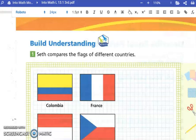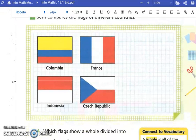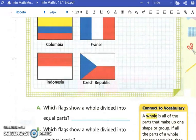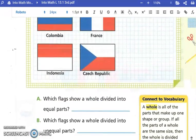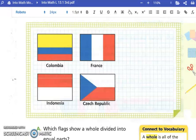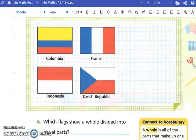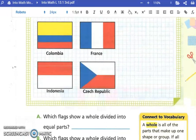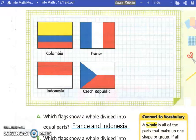Seth compares the flags of different countries. We have Colombia's flag, that's the yellow, blue, and red flag. We have France's flag, which is blue, white, and red. Indonesia's flag, which is just red and white. And then we have the Czech Republic, which is red, blue, and white. The first question is, which flags show a whole divided into equal parts? France and Indonesia.